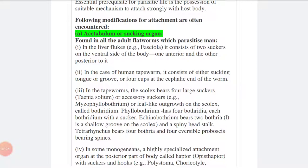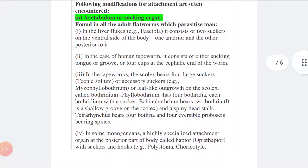Like the acetabulum or the sucking organs, which is found in all the adult flatworms which are parasitic in man. Flatworm means Fasciola hepatica. In the liver flukes, it consists of two suckers on the ventral side of the body, one anterior and one posterior to it.